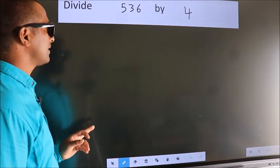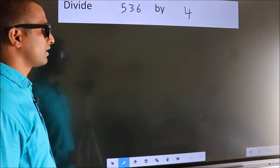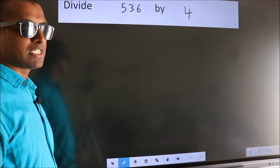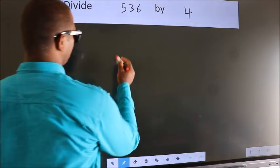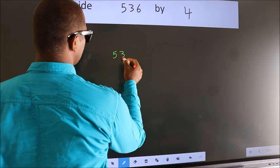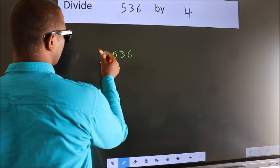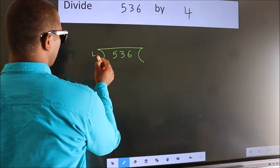Divide 536 by 4. To do this division, we should frame it in this way. 536 here, 4 here.